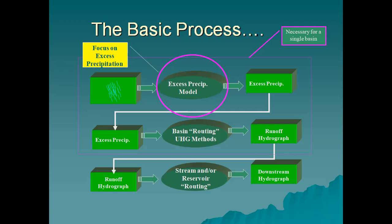The basic process focuses on excess precipitation necessary for a single basin. From excess precipitation, the process moves to basin routing, unit hydrograph methods, and runoff hydrograph. From the runoff hydrograph, it proceeds to stream and reservoir routing, and then to the downstream hydrograph.